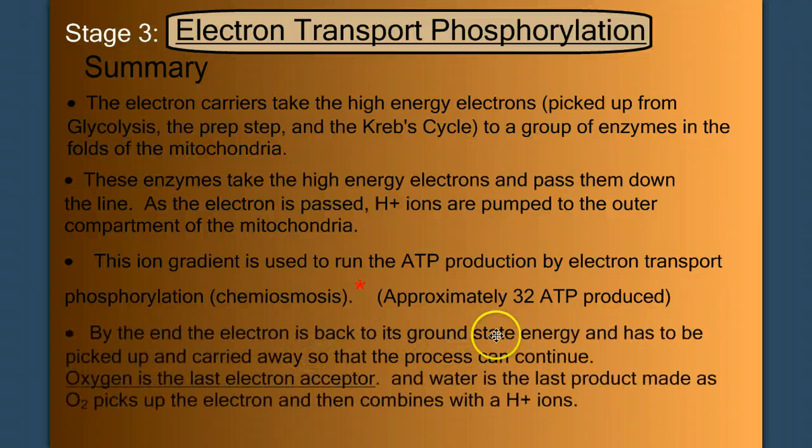When the electron gets to the end of the electron transport chain, oxygen is the last electron acceptor, and water is the last product made, as the oxygen picks up the electron and combines with the hydrogen. This is interesting because it's a nice mirror to what we saw in photosynthesis, where water was the original electron donor. Here, oxygen is the last electron acceptor, and water is the final product made.